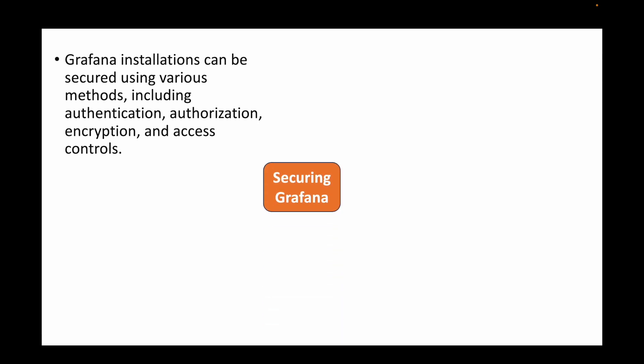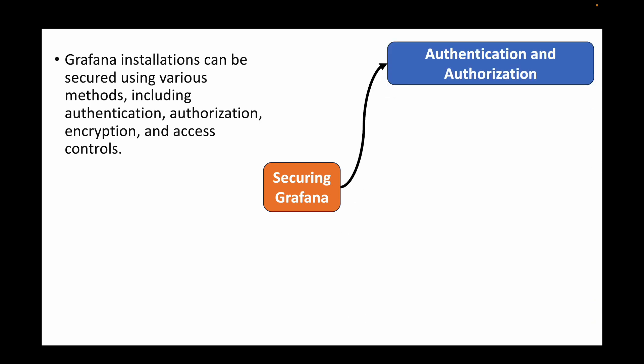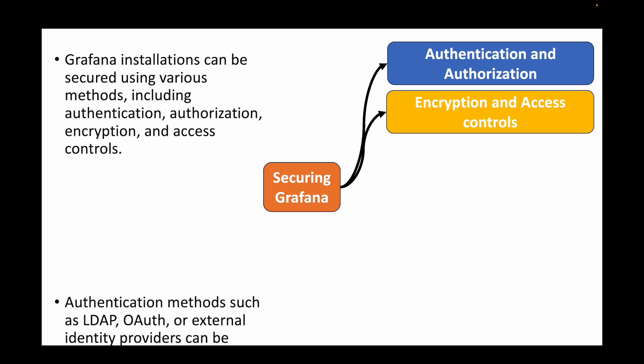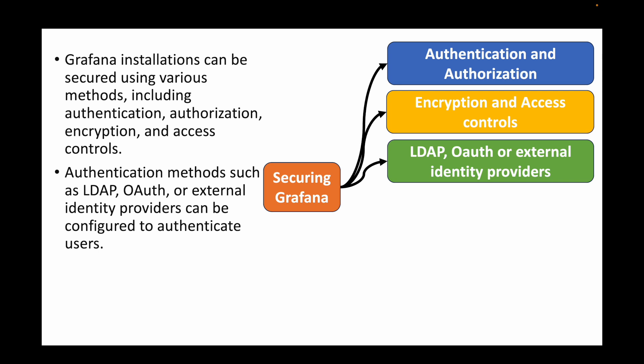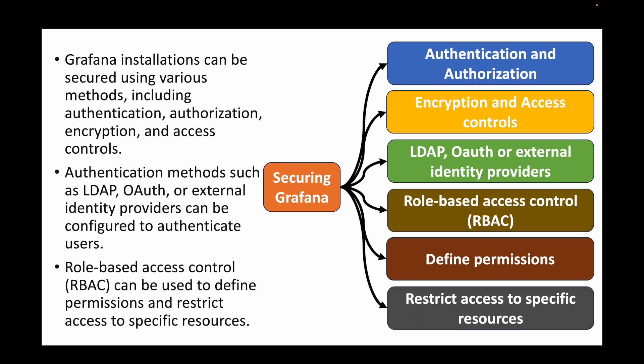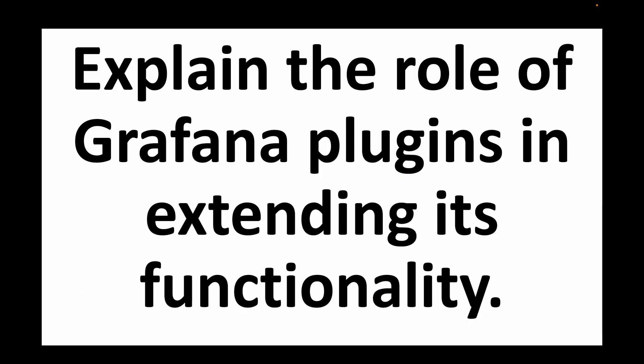The next question is: how do you secure a Grafana installation? Grafana provides various security methods including authentication, authorization, encryption, and access controls. Authentication methods include LDAP, OAuth, and external identity providers. You can configure who can log in and set permissions accordingly. Grafana also supports RBAC — role-based access control — which can be used to define permissions and restrict access to specific resources, controlling who can access Grafana and what they can do.